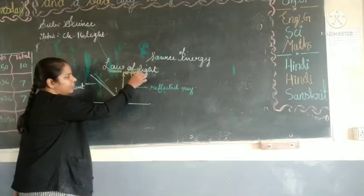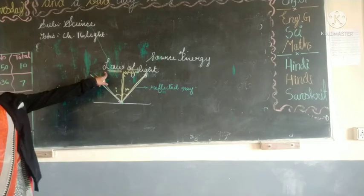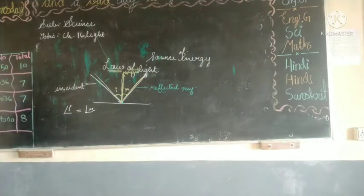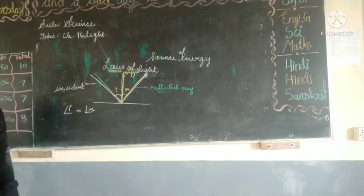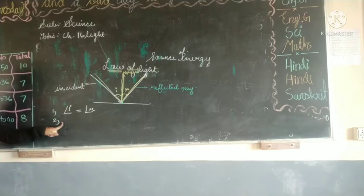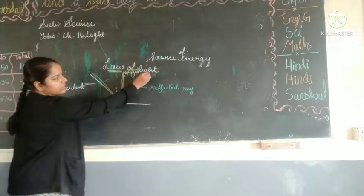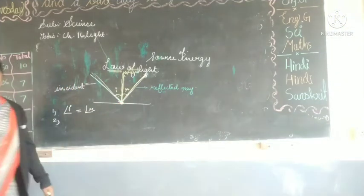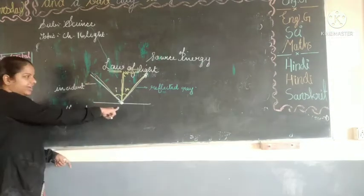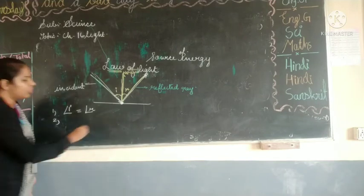The angle between the reflected ray and the normal is called the angle of reflection. According to the laws of reflection, the angle of incidence is always equal to the angle of reflection — jitna angle hai, same angle hoga. According to the laws of reflection, the incident ray, normal ray, and the reflected ray lie in the same plane — at the same point, which is called the point of incidence.